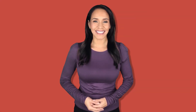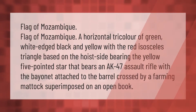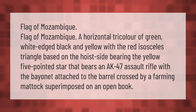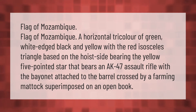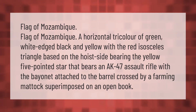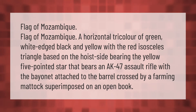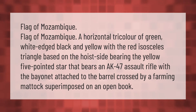The flag of Mozambique is a horizontal tricolor of green, white edged black, and yellow, with a red isosceles triangle based on the hoist side. It bears a yellow five-pointed star that features an AK-47 assault rifle with a bayonet attached to the barrel, crossed by a farming implement superimposed on an open book.